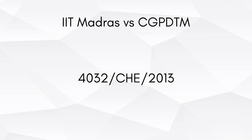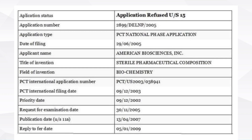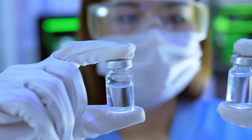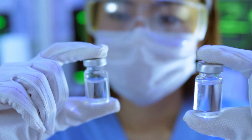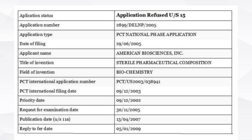Coming to Section 3E: a substance obtained by a mere admixture resulting only in the aggregation of the properties of the components thereof, or a process for producing such substance, is non-patentable. An example is patent application number 2899-NP-2005, where a sterile pharma composition was claimed which included a water-insoluble anti-cancer agent and a pharma-acceptable carrier albumin, with an albumin to anti-cancer agent ratio of 1:1 to 9:1. Since this was just an admixture of two known substances which did not involve an inventive step, it was rendered non-patentable.